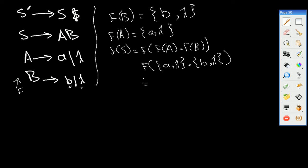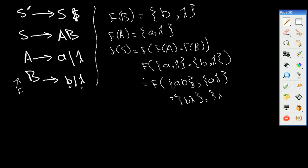We try to distribute this production between the two sets. We get FIRST(B) and lambda, so we have lambda. For FIRST(A) times lambda, we get {A, lambda}. Anything multiplied by lambda remains the same, and lambda times B gives us {B, lambda}. Finally, lambda times lambda gives us {lambda, lambda}. We take the FIRST of all these elements.